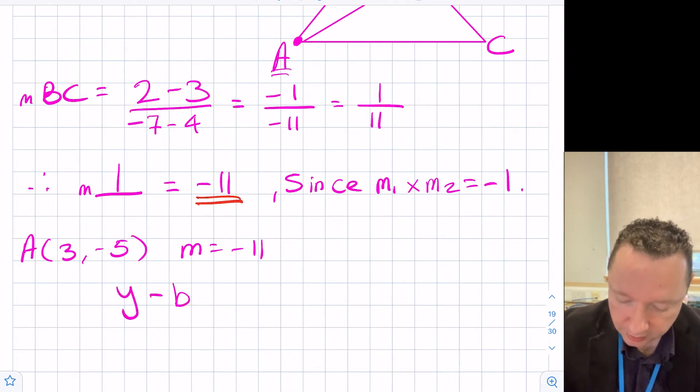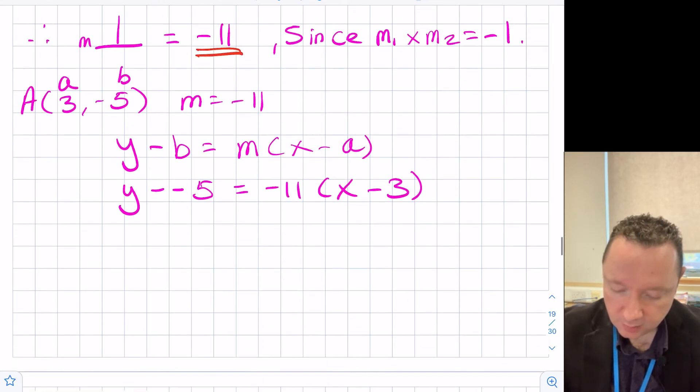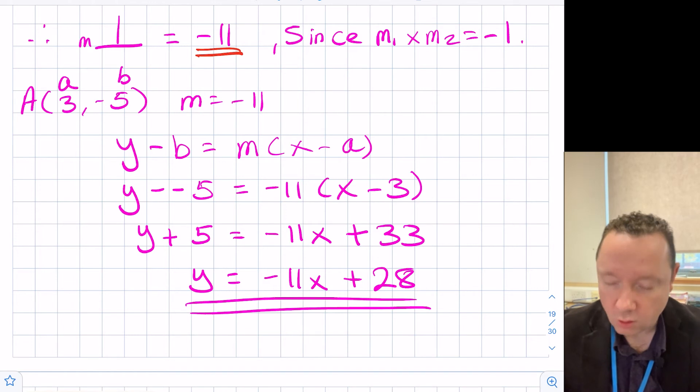Y minus B equals MX minus A. So that's the point A, and that's the point B. Y minus -5, watch out for your double minuses, equals -11(X minus 3). Simplify that a little bit. So we've got Y + 5 is -11X + 33. Or to take 5 over to the other side, we get -11X + 28. We've now got the equation of our altitude.